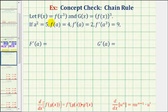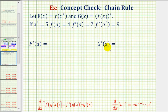We're told to let big F of X equal F of X cubed and big G of X equal F of X raised to the third power. If A squared equals five, F of A equals four, F prime of A equals two, and F prime of A cubed equals nine, we want to find big F prime of A and big G prime of A.